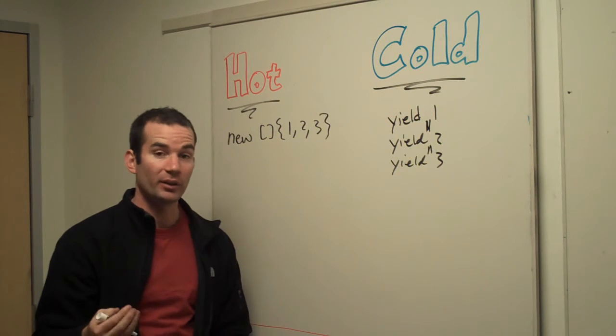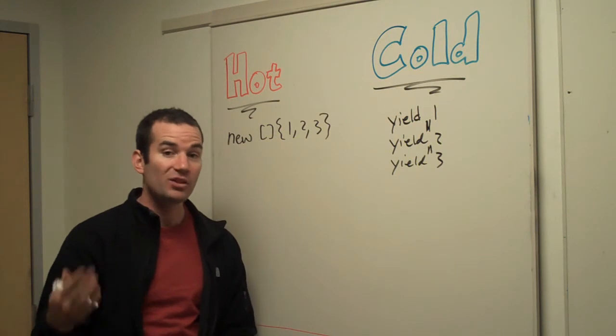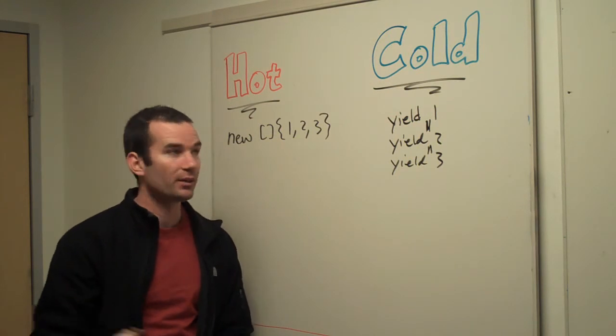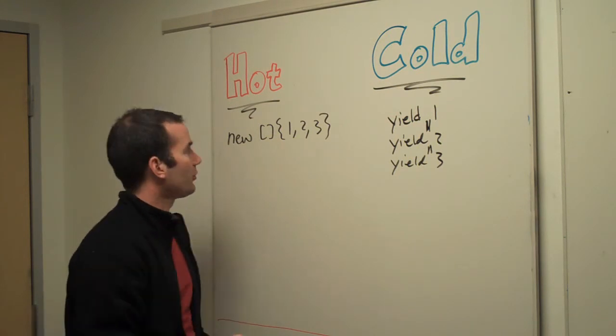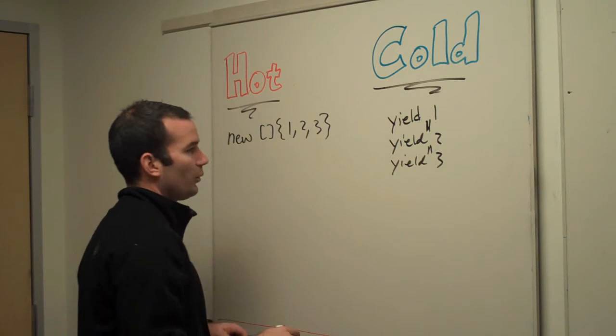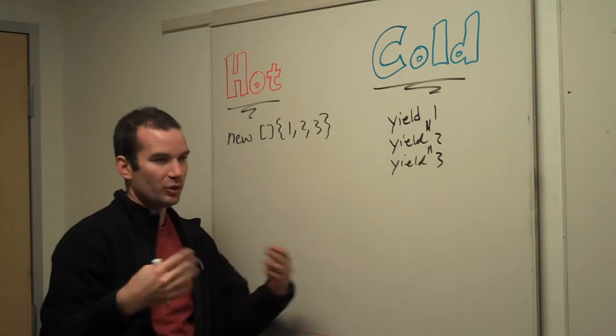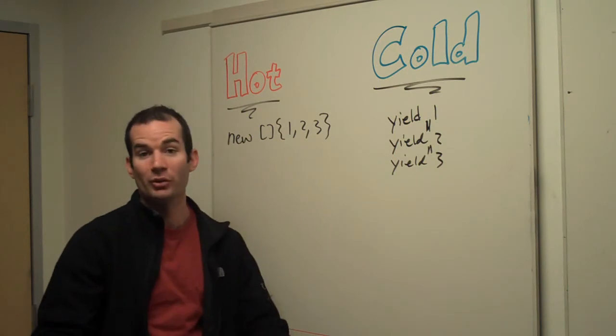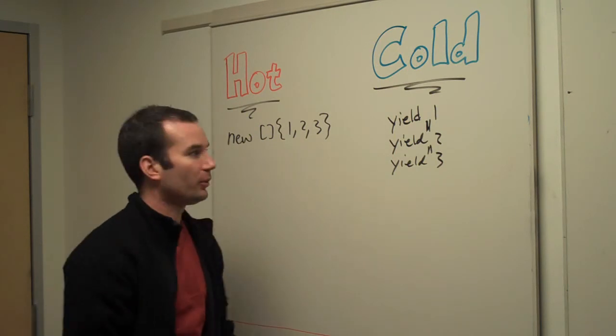In fact, the code running here would never run if I wouldn't have enumerated it. And importantly, it will run for each time I enumerate it — which is not true with code that might have produced a bunch of values and stored them into a list.